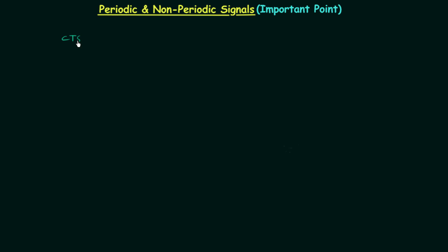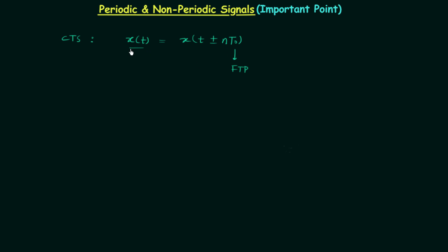For continuous time signals, the condition for periodicity says: if a signal x(t) is periodic, then it is equal to x(t ± nT0), where T0 is the fundamental time period and n is any integer. From this we can clearly see that if you perform time shifting — either left or right — by nT0, you will get the same signal.